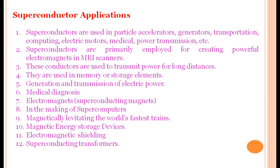Superconductors are used to transmit power over longer distances because, being superconductors, the resistance is zero. If the resistance is zero, there is no power loss. However, up to now, no superconductor has been discovered that works at room temperature under ordinary conditions. They are used in memory devices or storage elements, and in generation and transmission of electric power.